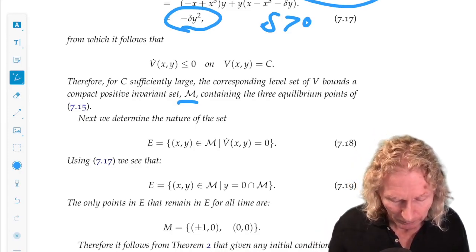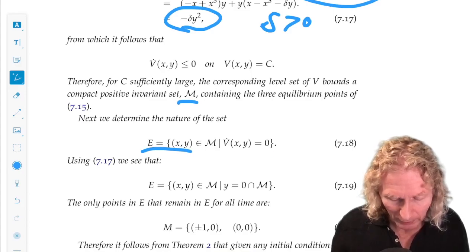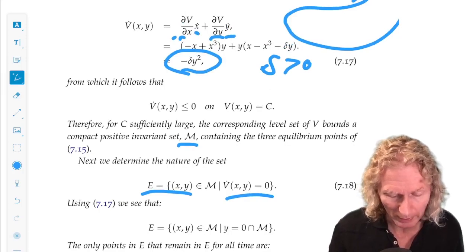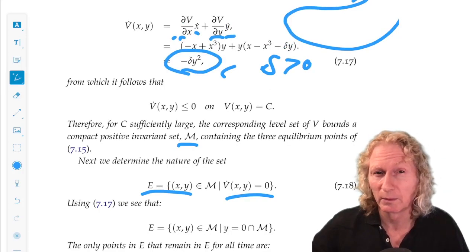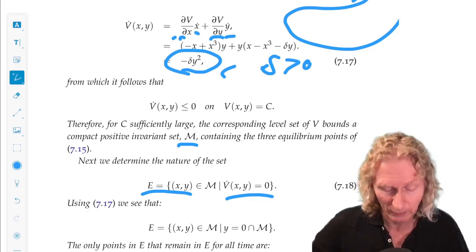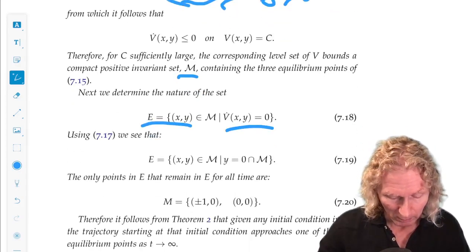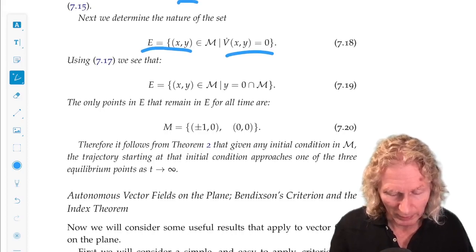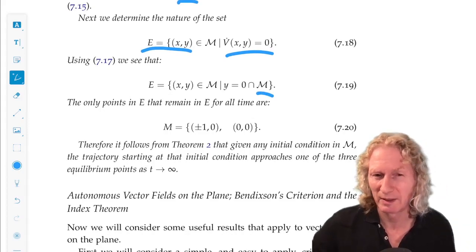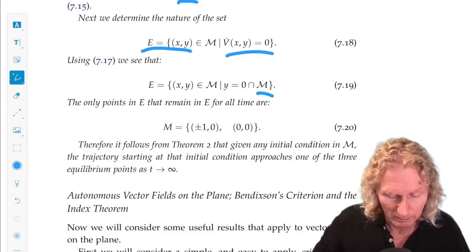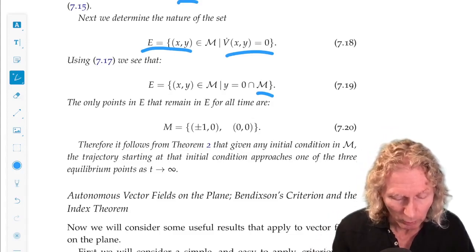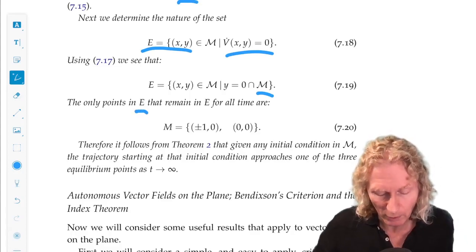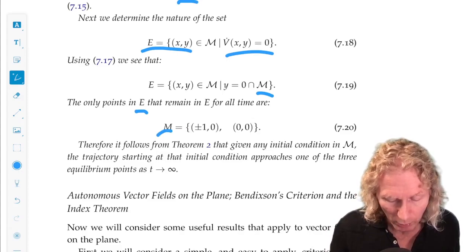Now, E. E is the set of points where V̇ is zero. That's when y = 0, the x-axis. V̇ is zero on the x-axis, not all the x-axis, but just the part intersecting with M, but that's as big as we want.